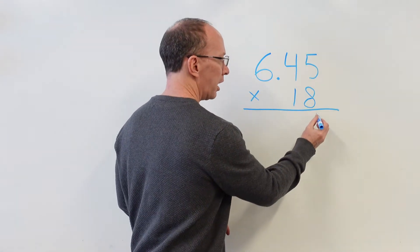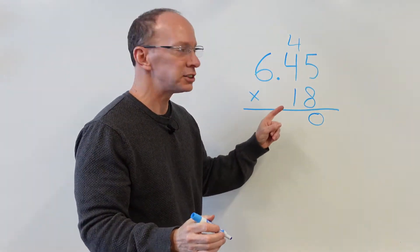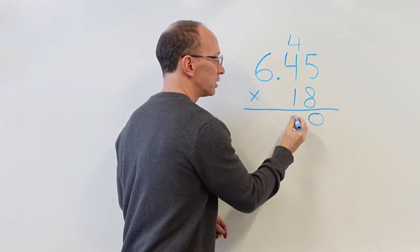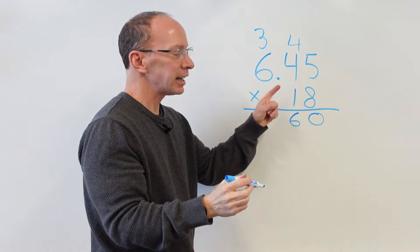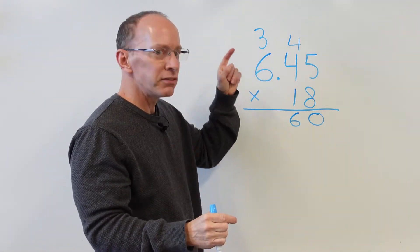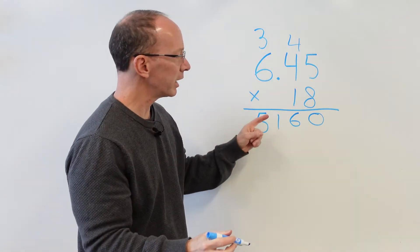So let's go ahead and start. 8 times 5, 40. Put the 4 up here. 8 times 4, 32, 33, 34, 35, 36. Put the 6 right here, put the 3 up here. 8 times 6, 48, 49, 50, 51. So I put 51 right there.